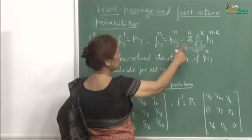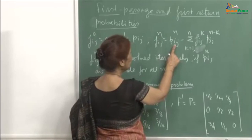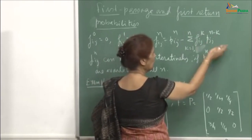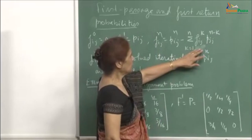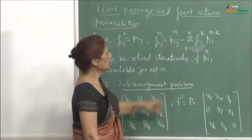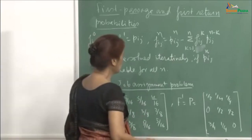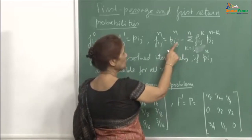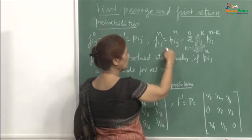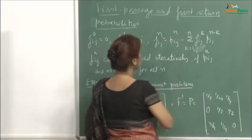For f_ij(n), we wrote down this formula through which we can recursively compute f_ij. f_ij(n) = p_ij(n) minus sigma k varying from 1 to n of f_ij(k) into p_jj(n minus k). Because p_ij(n) gives the probability of transitioning from i to j in n steps, and in between you could have visited state j a number of times. All possible paths from i to j may include going to j and then staying at j, or going from j somewhere and coming back, so we subtract those probabilities to compute f_ij(n).